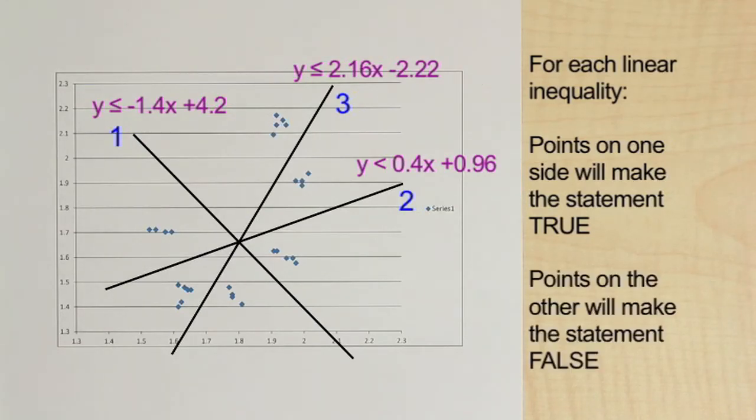For example, if I plug in a data point from the orange group into each equation, equation two is true and equation three is also true. So for any new data sample, if equation two is true and equation three is also true, then the sampled cap is orange.